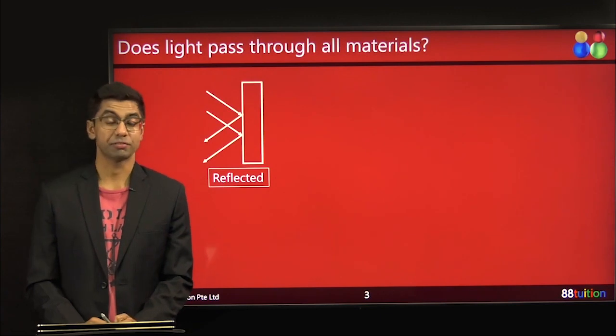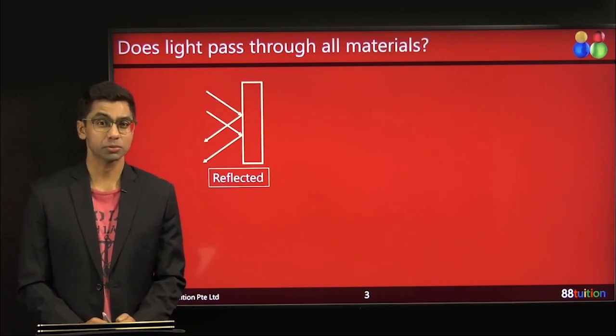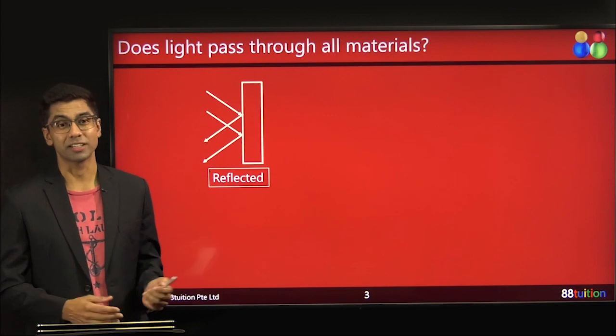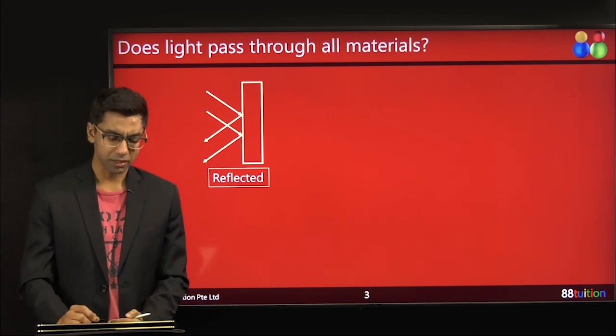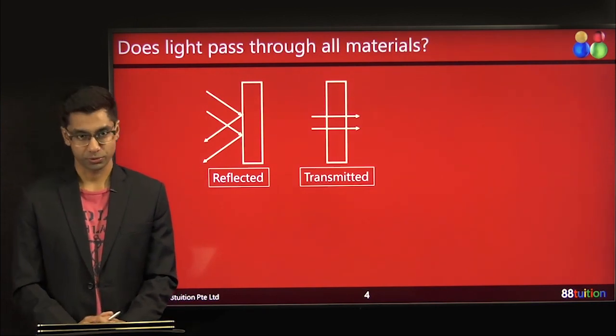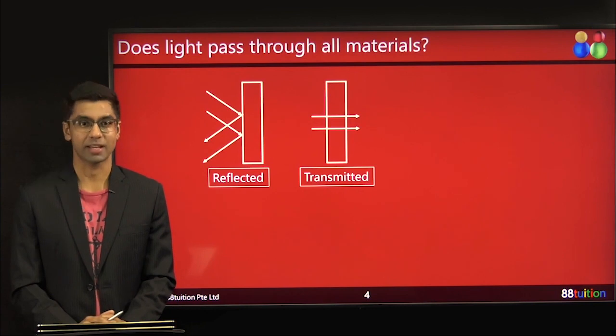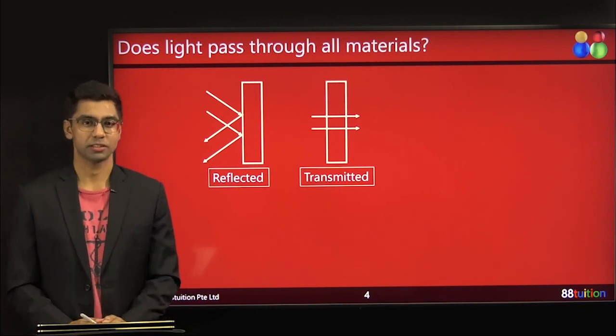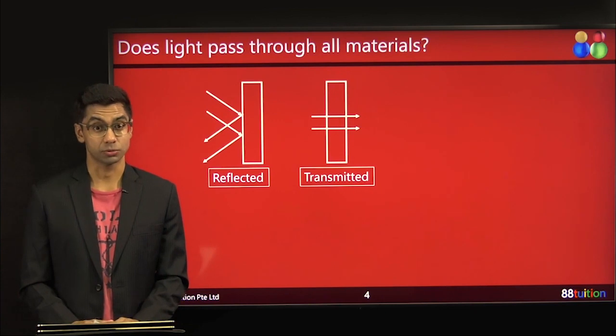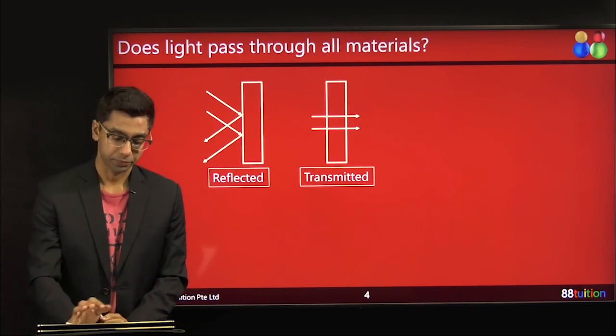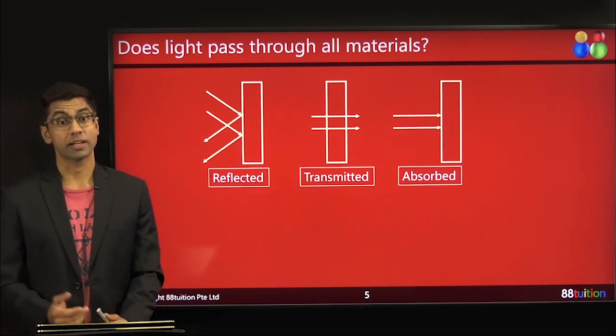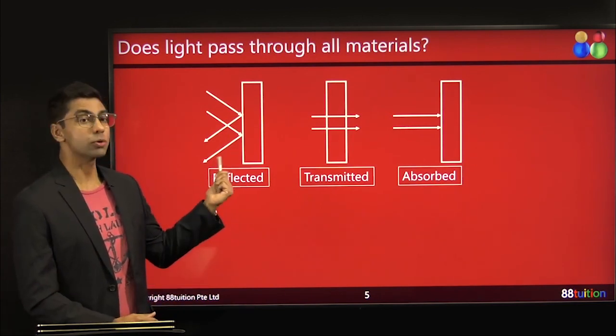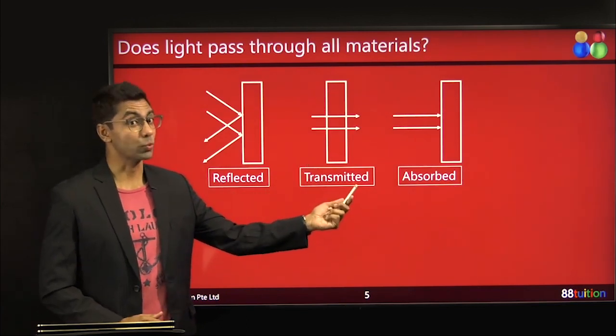So this is the first category: Reflected. Examples would be mirror and shiny surfaces. So all the light that comes in bounces off and does not get through this material. What do you mean by get through? This is get through. So the light actually can pass right through the material. Example: glass, clear glass, clear plastic, plastic sheets, anything that is transparent, is transparent because the light passes through completely. And that's the representing diagram. This, where light comes but doesn't get through.